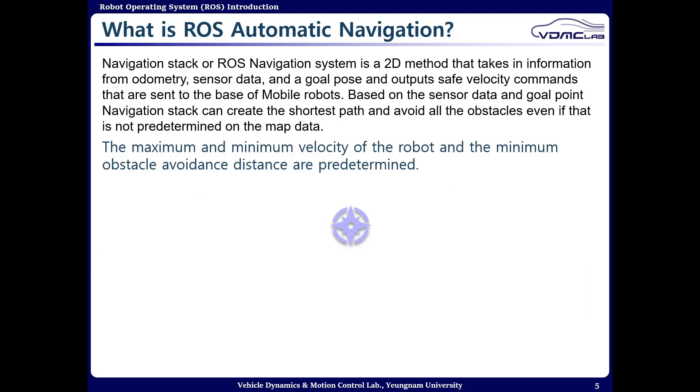First question is what is automatic navigation? Navigation A-star or ROS navigation system is a 2D method that will take some information like geometry, sensor data, and your set goal position, then output a safe velocity command.